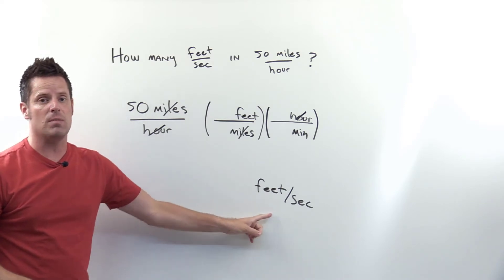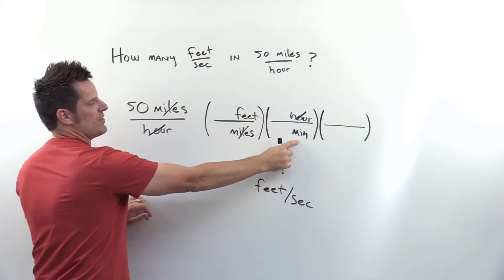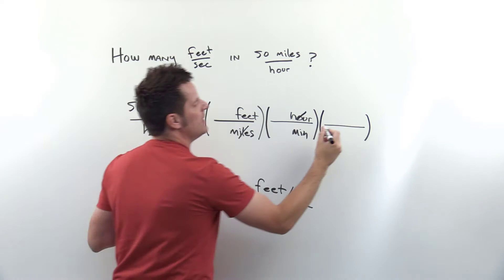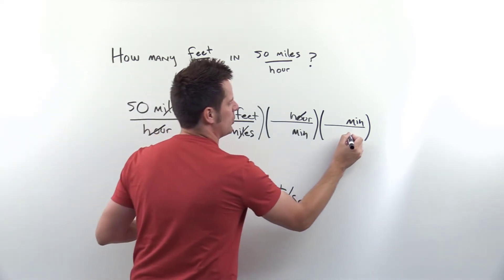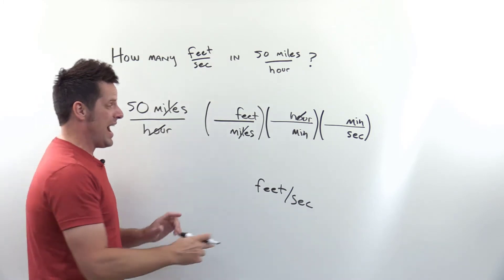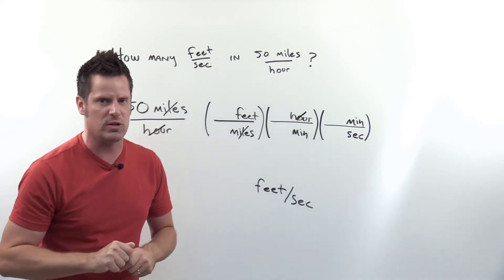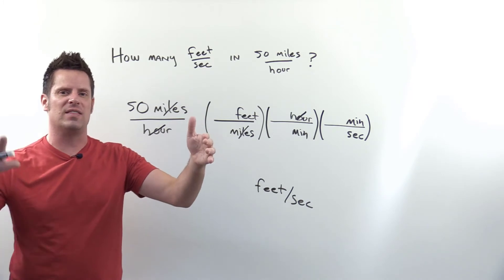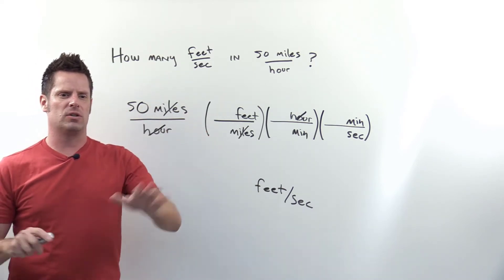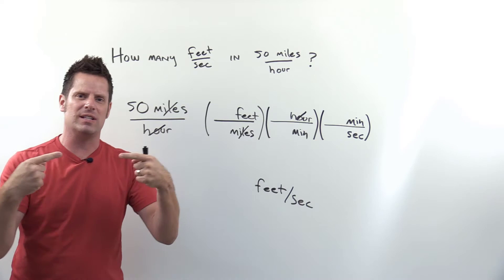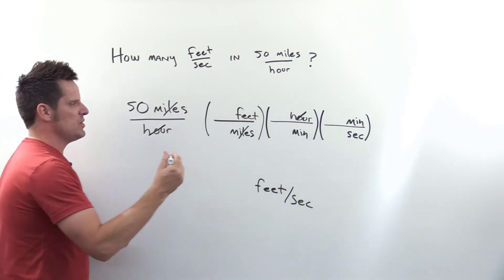Feet per minute is still not our destination — feet per second is. So we add another set of parentheses. Minutes is in the denominator, so we put minutes in the numerator of this new set of parentheses, then relate minutes directly to seconds. There is a certain number of seconds in one minute. We should only put two units in the same set of parentheses if they directly relate to each other — for example, you can't pair candelas with liters. We're now done with step three.